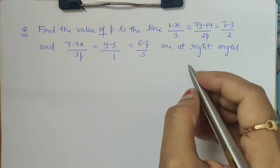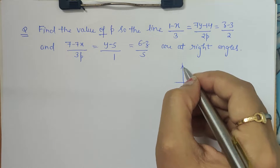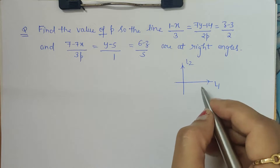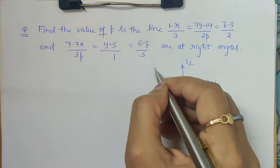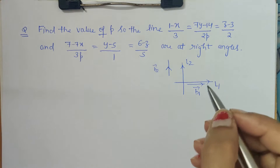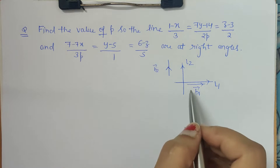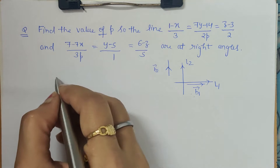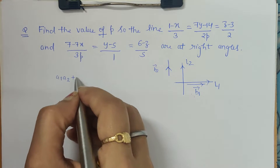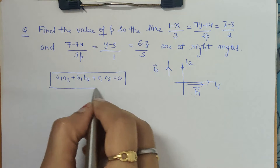Let's understand through a diagram. Let us say line l1 is perpendicular to line l2. For any line there is a parallel vector to it — let's say b1 in the direction of l1 and b2 in the direction of l2. When two lines are perpendicular, their parallel vectors are also perpendicular, so their dot product will be zero. That means the sum of the products of the corresponding direction ratios will be zero: a1·a2 + b1·b2 + c1·c2 = 0.